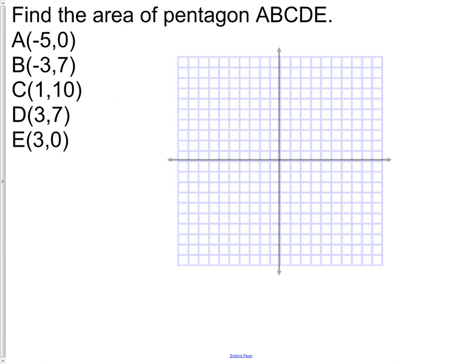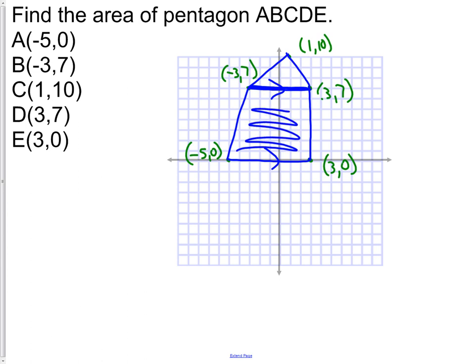Find the area of the pentagon ABCDE. First thing you need to do is plot the points. I've gone ahead and plotted the points. If you need to, pause the recording and go ahead and plot the points yourself. As I look at this figure, I think the way I would divide it up is if I drew in another line at the top, I kind of make it look like a house. But now I have two parallel lines, so I created a trapezoid here and a triangle at the top. So I can do the area of a trapezoid and the area of a triangle in order to figure out the area of this shape.